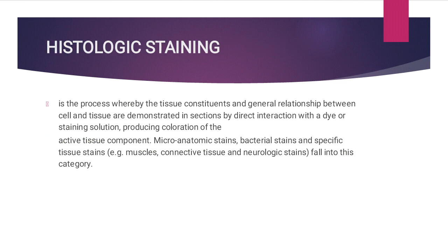Histological staining is the process whereby the tissue constituents and general relationships between the cell and tissue are demonstrated in sections by direct interaction with a dye or staining solution, producing coloration of the active tissue component. Micro-anatomic stains, bacterial stains, and specific tissue stains — such as muscle, connective tissue, and neurologic stains — fall into this category. Histologists have developed many stains suited to particular purposes, allowing cell structure to be differentiated.